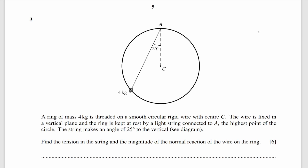The next question is about equilibrium, and we'll draw a clear diagram. We're looking for the normal force and the force of tension. The normal reaction is perpendicular to the surface, so let's draw a tangent to the circle and the normal reaction perpendicular to that tangent. Continuing this line, it goes through the centre of the circle because the tangent is perpendicular to the radius.